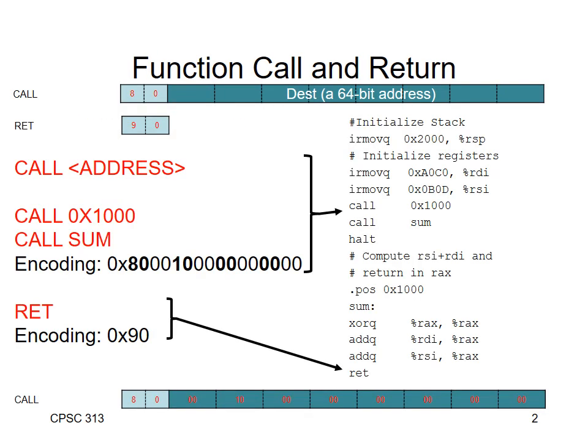Let's begin with demonstrating how call and return work. Call is going to be one of our 9-byte instructions with an opcode of 8, and it's going to have one argument, which is a destination address. You can specify that address either with a constant value — an immediate — or you can use a symbolic name to specify the destination.